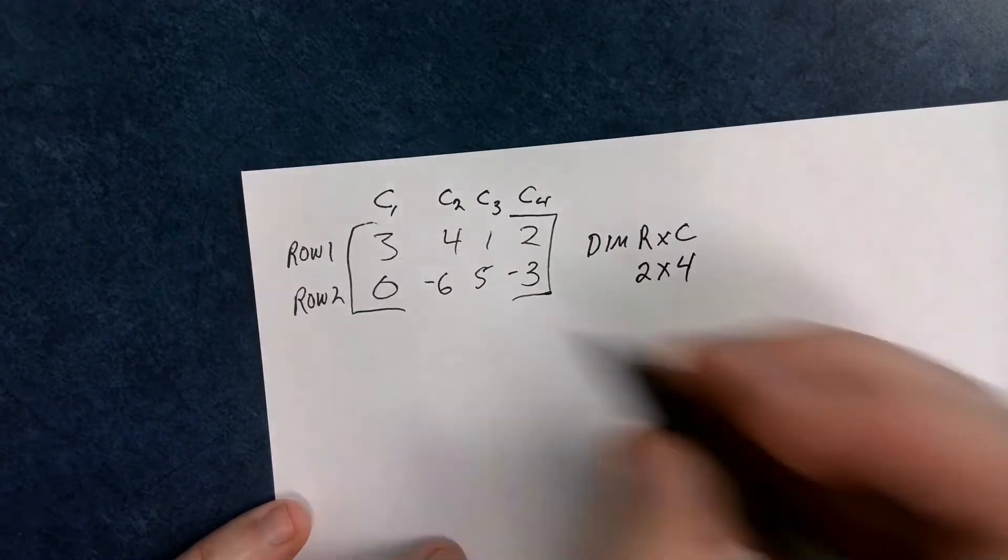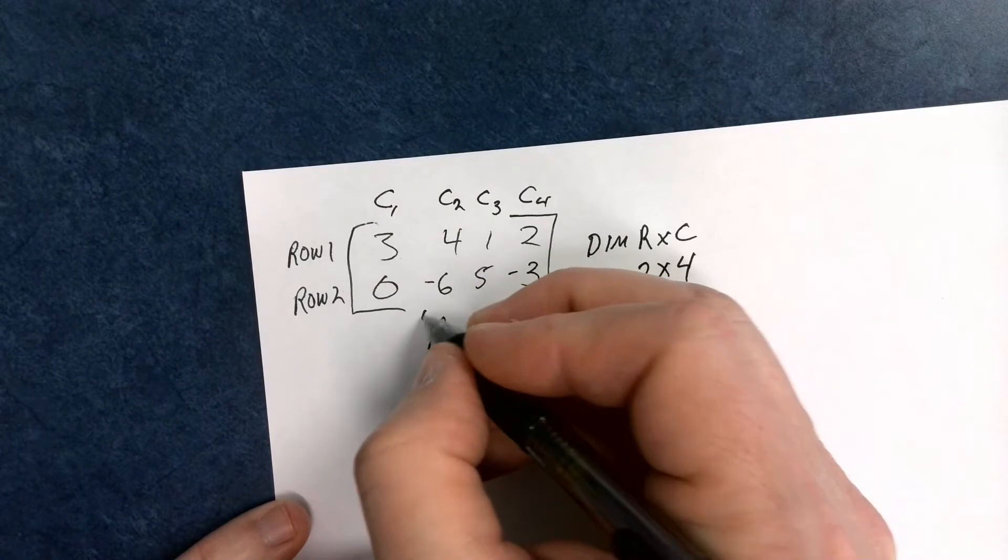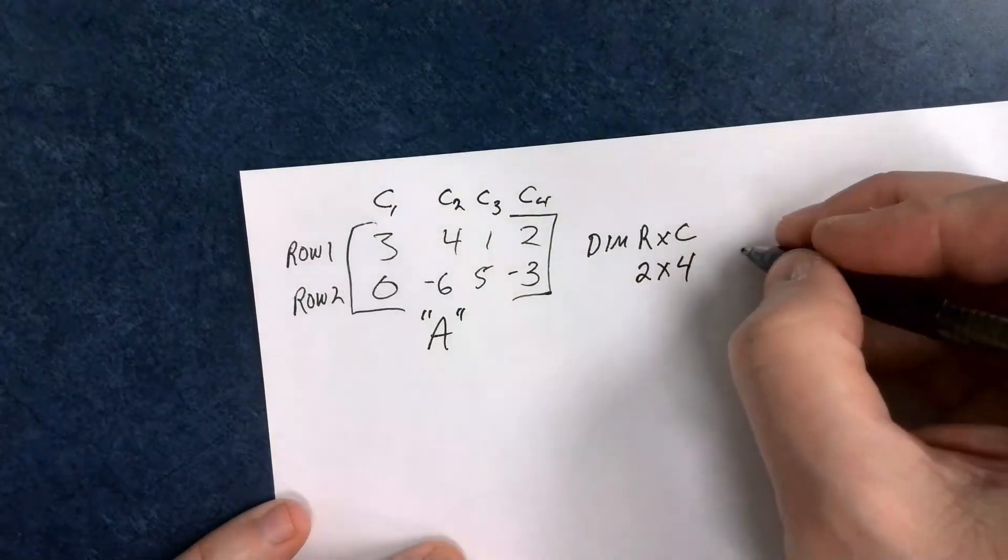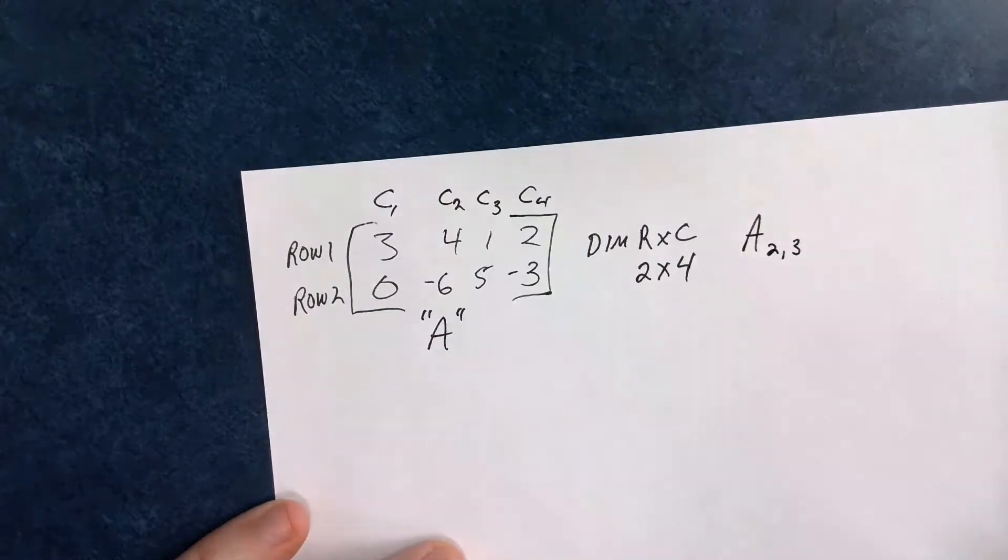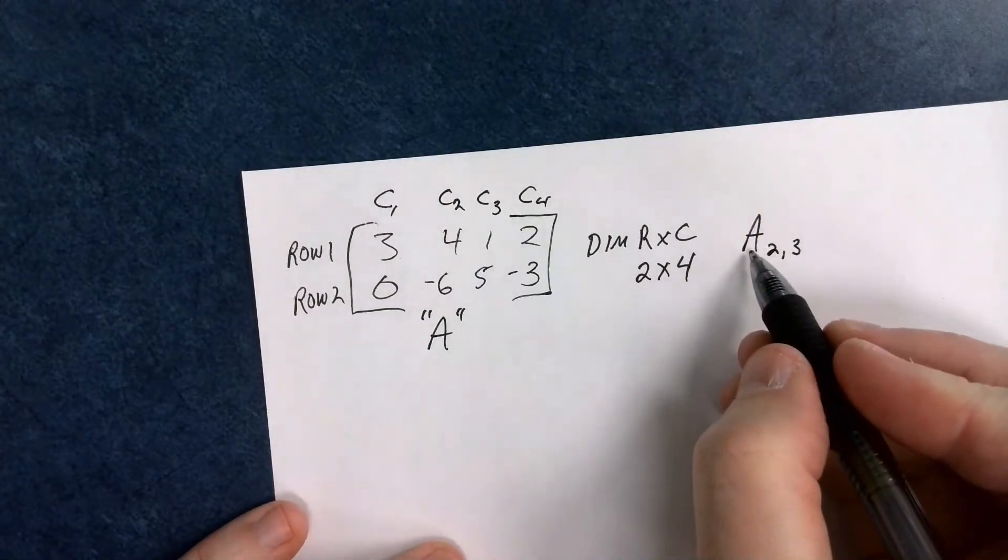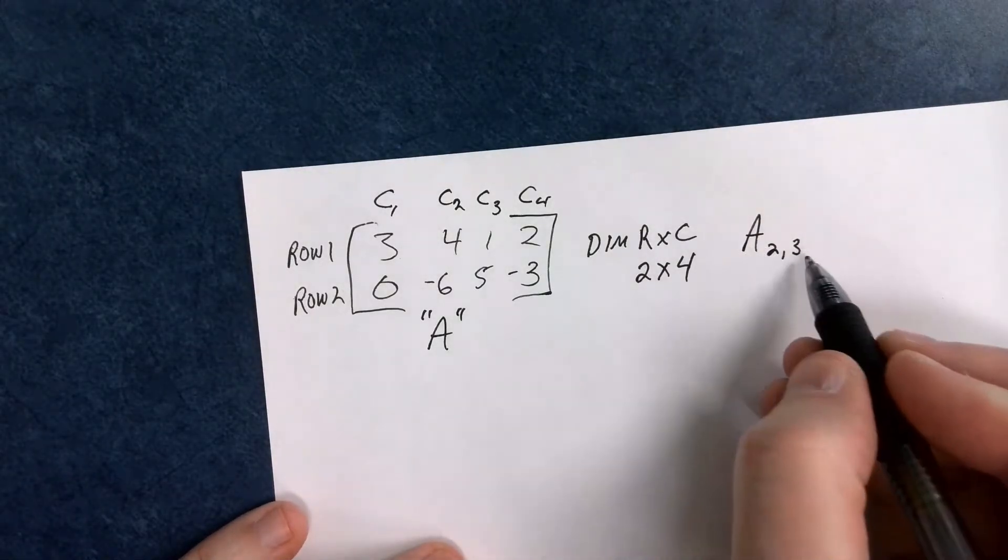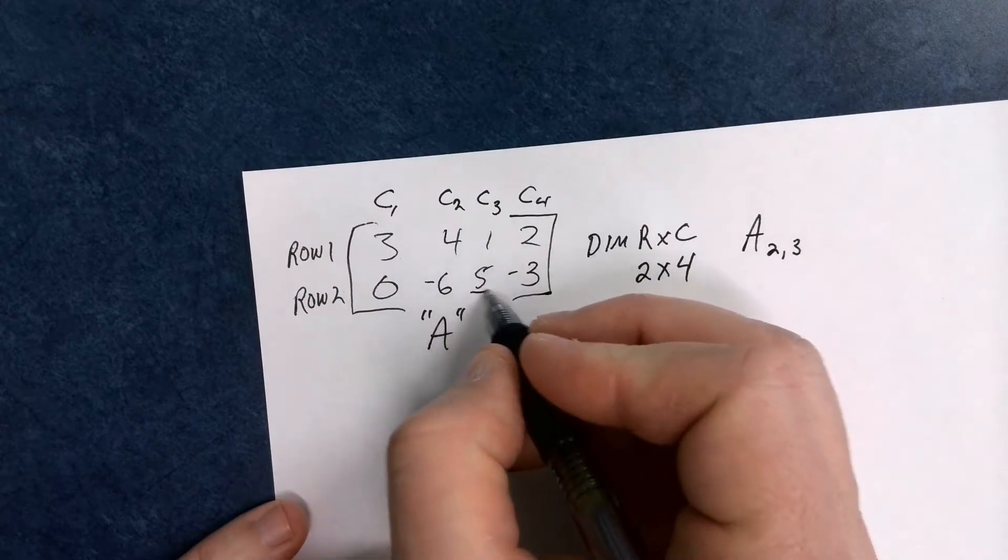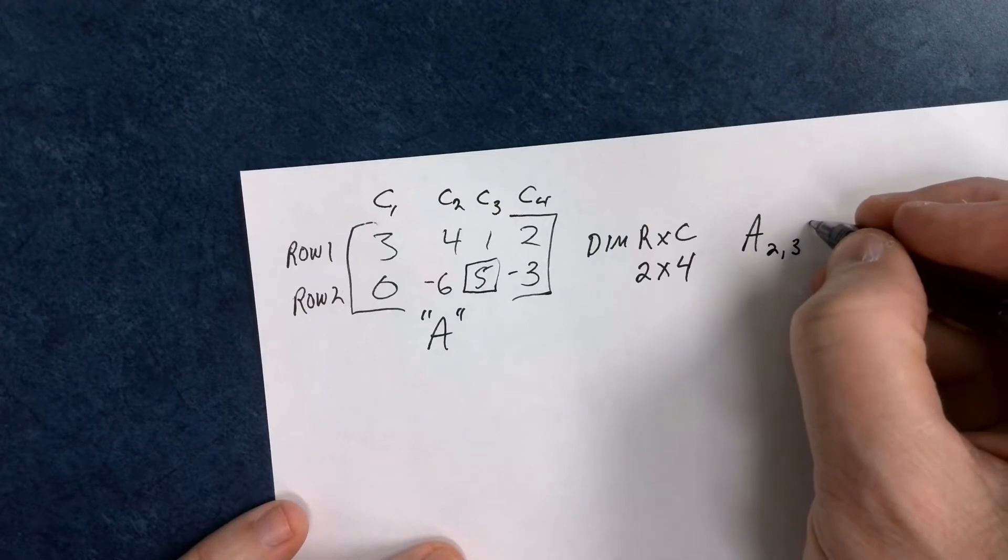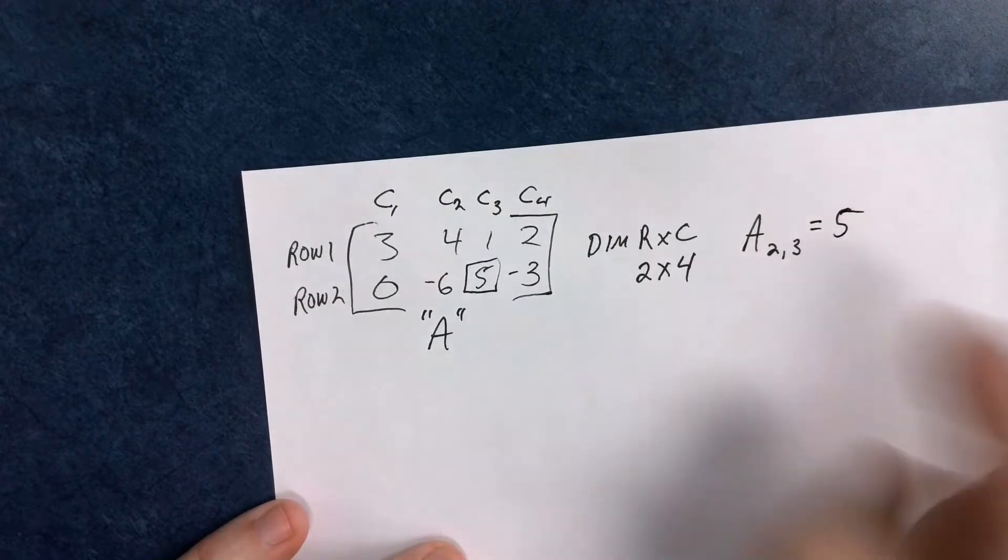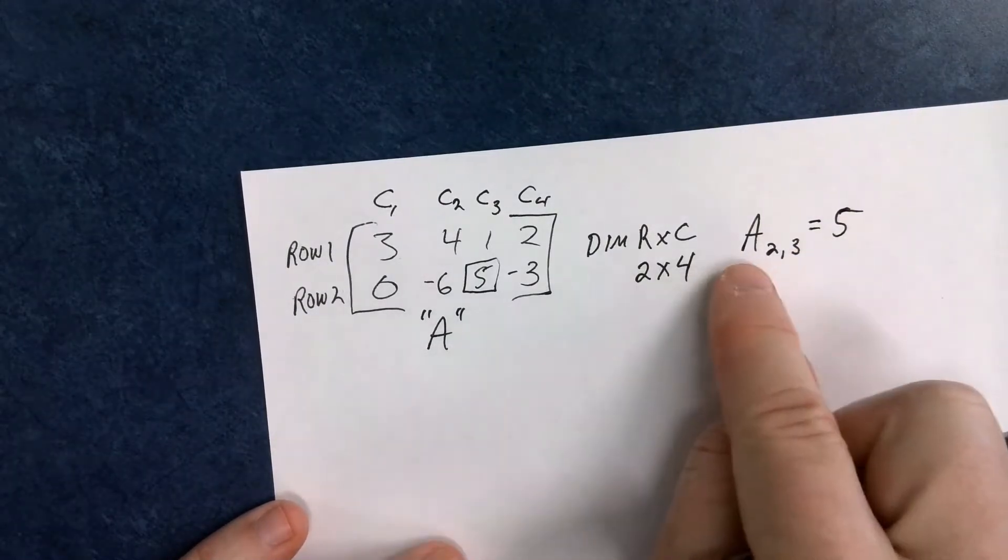Also, if we call this matrix A, then if I said A 2, 3, that we refer to in matrix A, row 2, column 3, and that would be that number right there. That would be a 5 in that number. And that's called a cell location, A23.